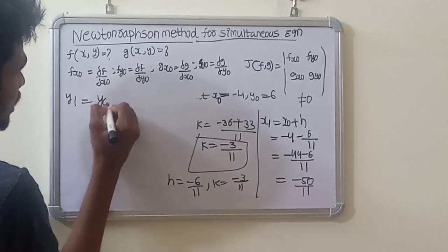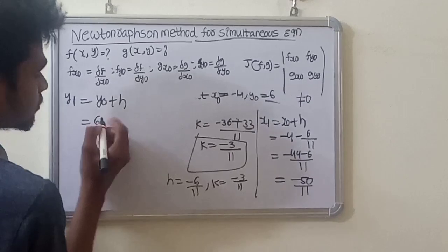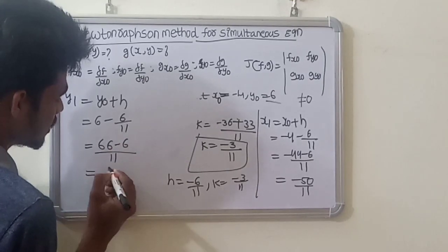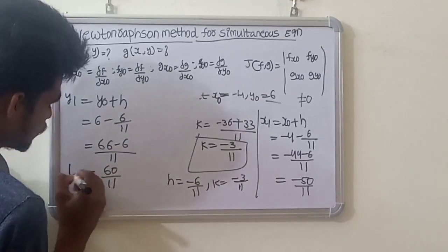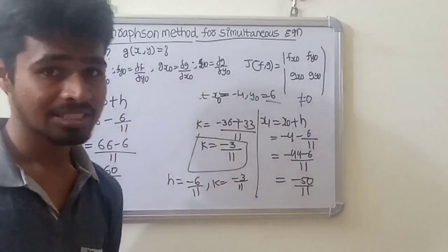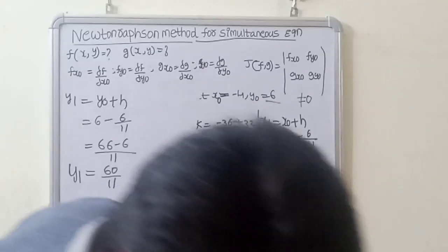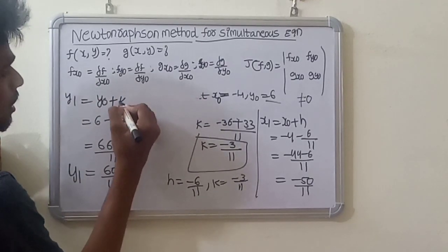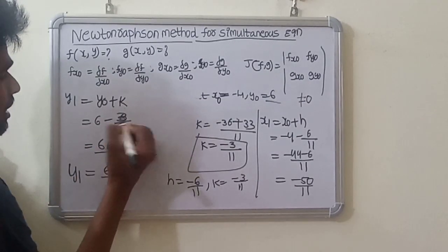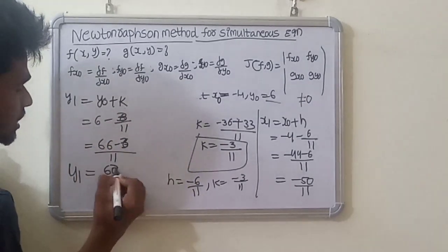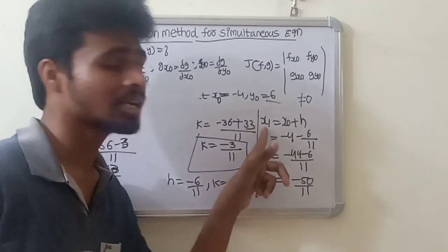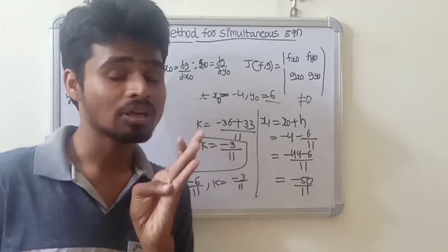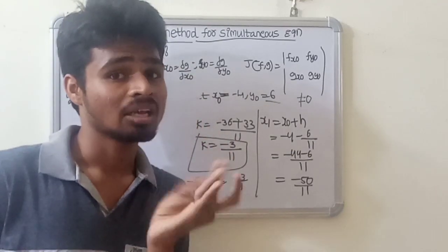Finding y1: y1 equals y0 plus k. The formulas are: x1 equals x0 plus h, y1 equals y0 plus k, x2 equals x1 plus h, y2 equals y1 plus k. Y1 value comes out to 63 by 11.